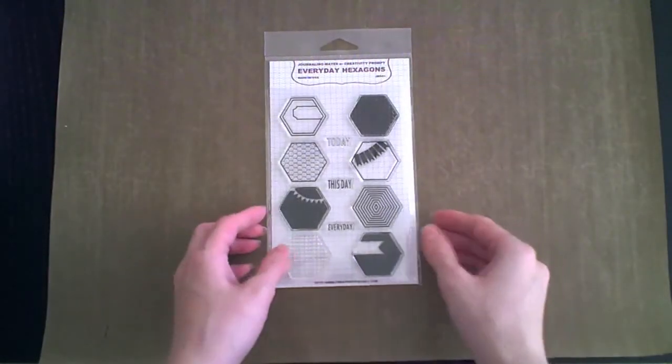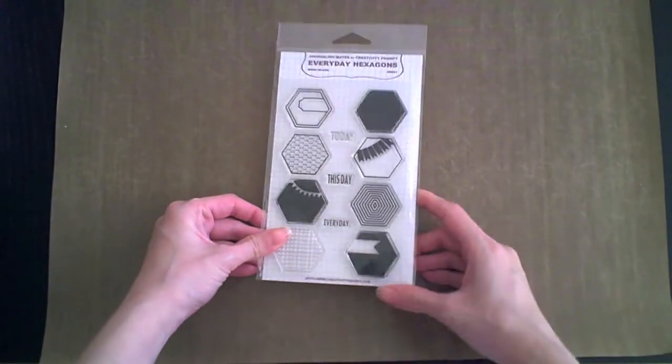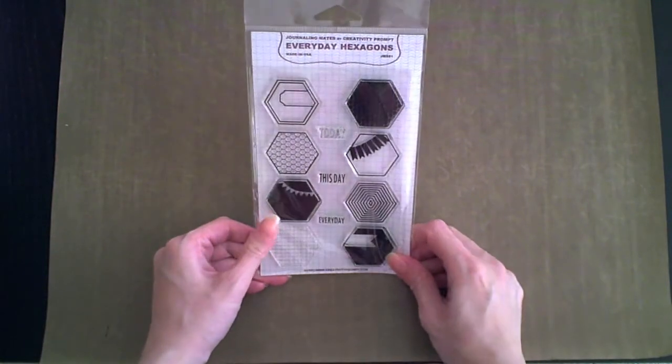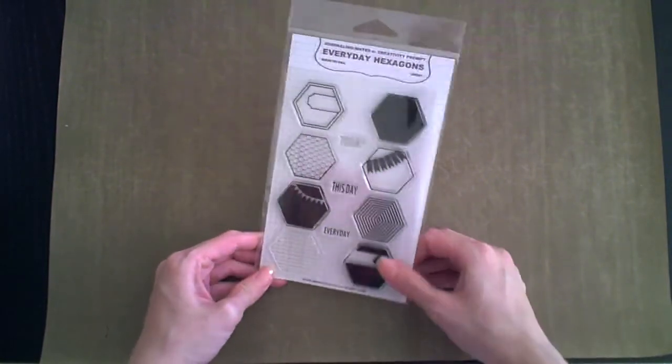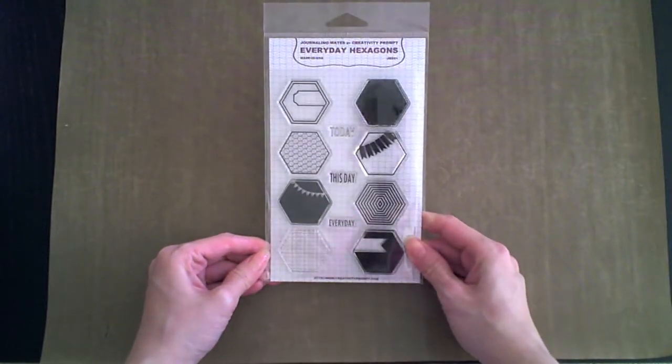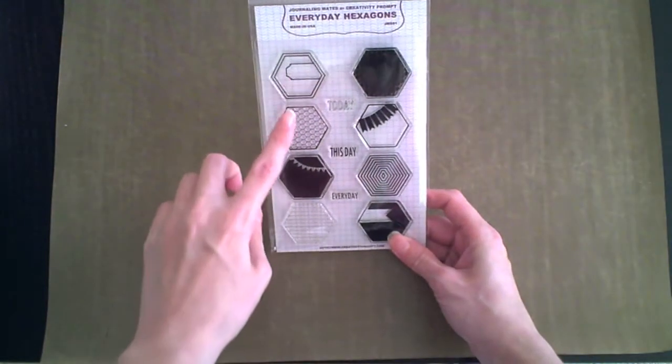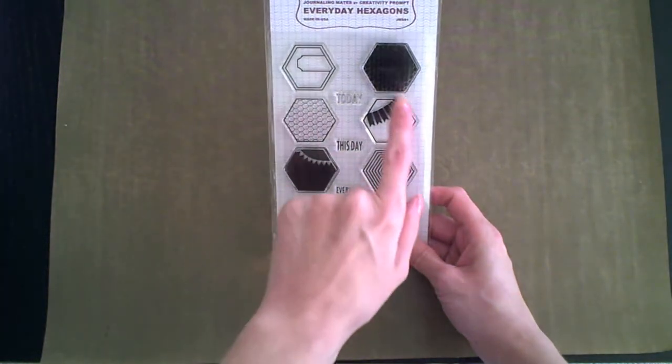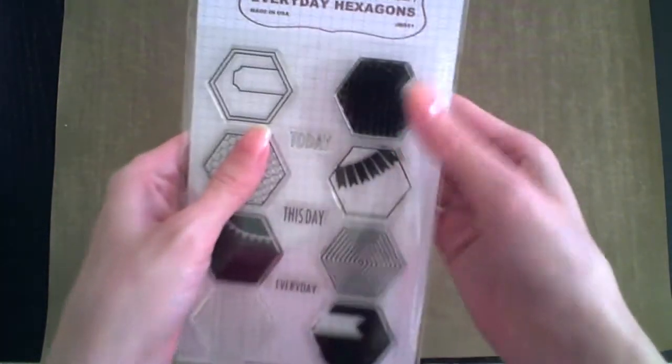Hi, I'm Avital from Creativity Prompt and I'm so excited to show you my first clear stamp set. It's called Everyday Hexagons and as the name indicates it has 8 hexagons, both outline design and negative design.